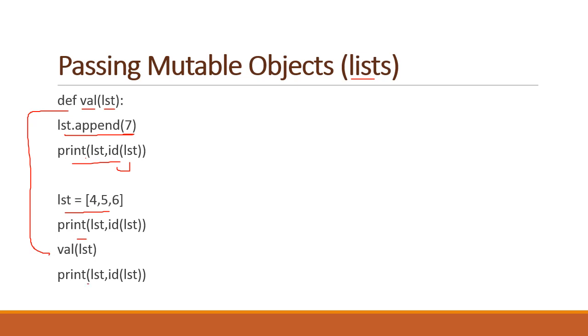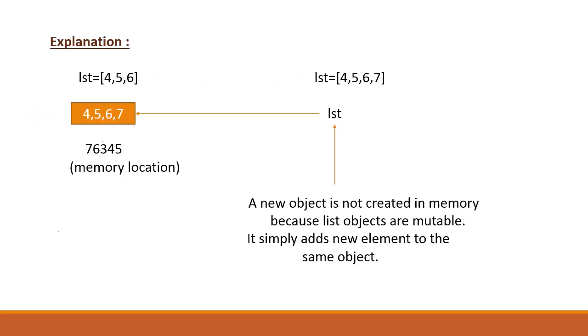You printed it, then called the function again. Then again you printed the list. So to see the difference here, this value was 4, 5, 6. You appended 7 to it, so now the values are 4, 5, 6, 7.